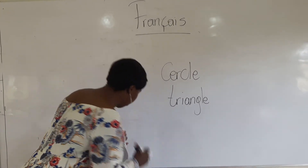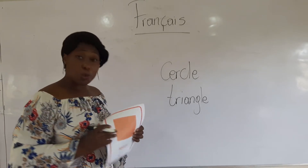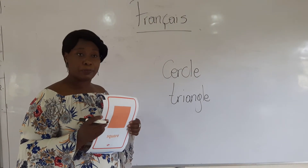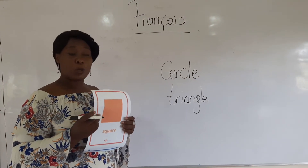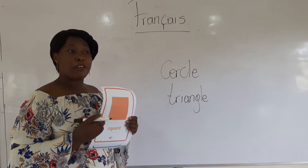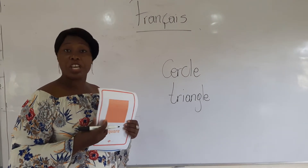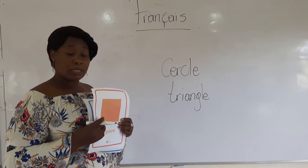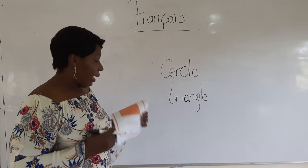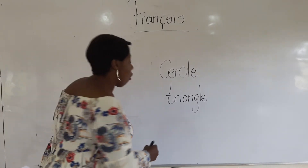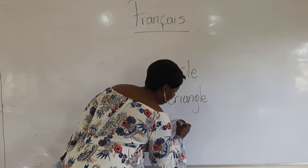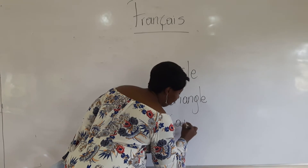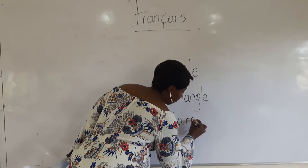And next we have a square. A square in French is carré. Carré, le carré. We write it like this — carré.